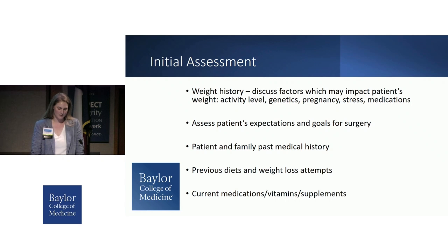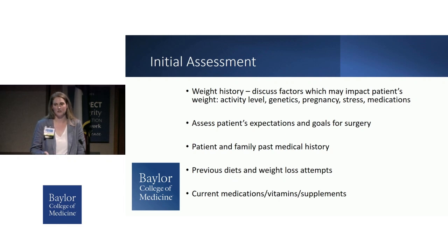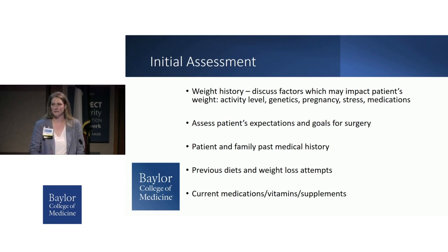During the patient's initial assessment with the dietitian, we'll start by gathering necessary historical information. We'll discuss the patient's weight history, factors that impact weight such as physical activity level, family history, any history of pregnancies, and factors affecting stress level. We'll talk about their expectations and goals for surgery, what is motivating them, how much weight do they expect to lose, and whether or not these are realistic expectations. We'll also discuss their past medical history, previous diet and weight loss attempts, any medications including vitamins and herbal supplements.